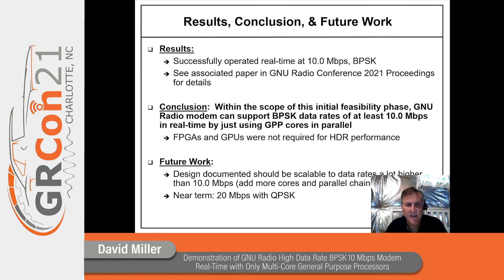For a lot more details on this project, please see the associated paper that will be in the conference proceedings. Future work: this approach should be scalable to data rates a lot higher than 10 megabits per second — just add more cores, add more parallel chains. In the near term I want to add a QPSK 20 megabits per second capability.